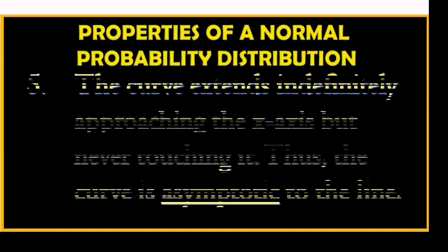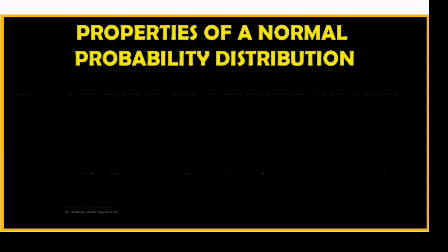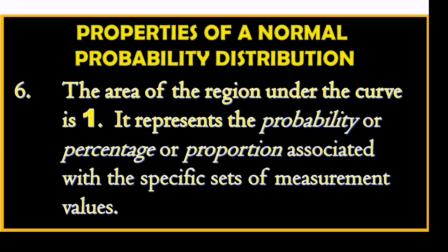Number 5: The curve extends indefinitely approaching the x-axis but never touching it. Thus, the curve is asymptotic to the line. Number 6: The area of the region under the curve is 1. It represents the probability, percentage, or proportion associated with the specific sets of measurement values.